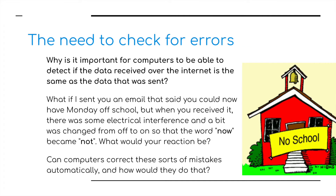So why do we need to check for errors? If we send data between computers or over the internet, we need to ensure that the data that's been received is the same as the data that's been sent. For example, what if I send you an email that said you could now have Monday off school, and when you receive it there's some electrical interference and a bit has changed from off to on, so the word 'now' becomes the word 'not'. Can computers correct these sort of mistakes automatically? Yes — you're going to school on Monday.